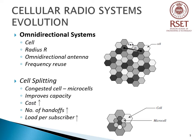In cell splitting, a congested cell is subdivided into smaller cells called microcells, each with its own base station and a corresponding reduction in antenna height and transmitted power. Cell splitting improves capacity by decreasing the cell radius R and keeping the D/R ratio unchanged, where D is the distance between centers of the clusters. The disadvantages of cell splitting are: first, the cost incurred from installation of new base stations; second, an increase in the number of handoffs; and third, higher processing load per subscriber.